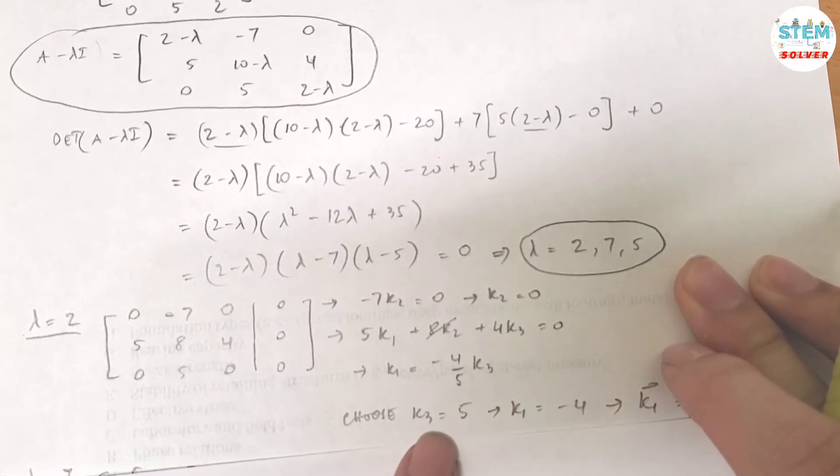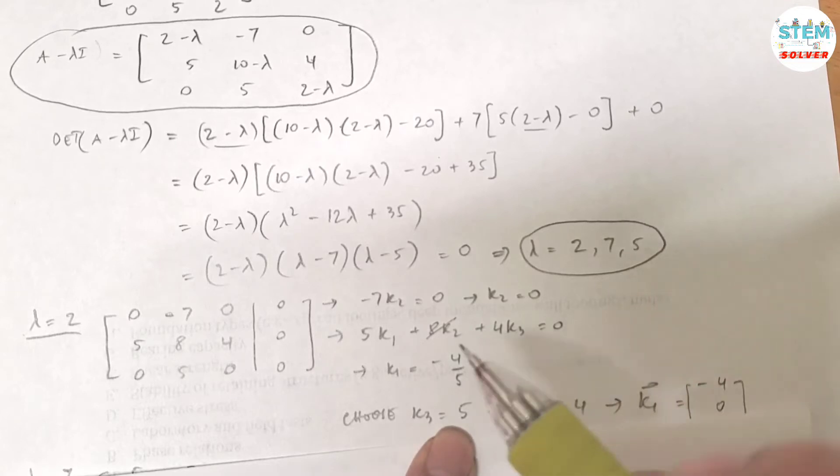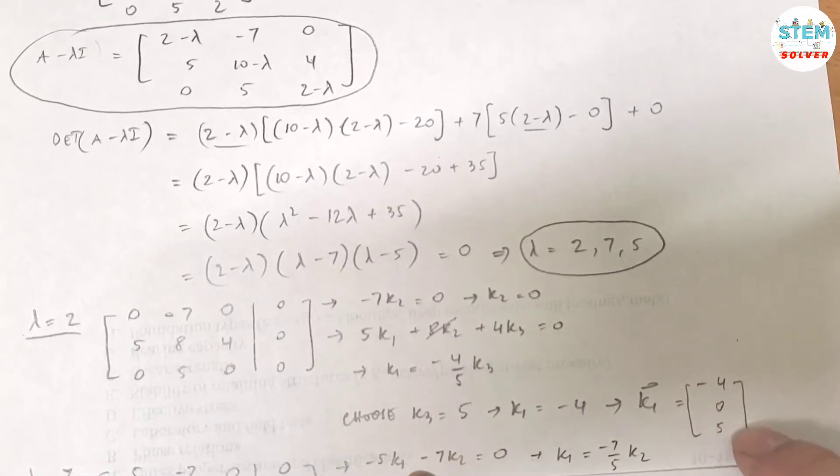So if I choose k3 equals 5, then k1 equals negative 4. You can choose whatever value for k3, as long as it's not 0. The reason I chose 5 is because I don't want to work with fractions. Okay, then my vector k is negative 4, 0, 5.